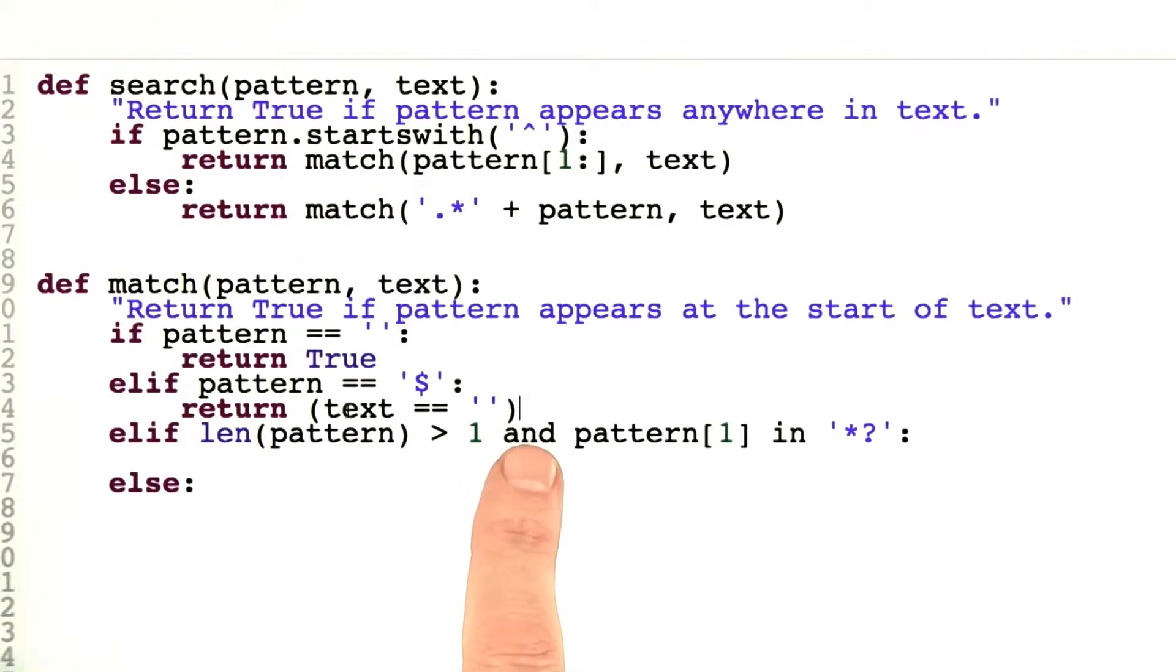So the first character is not a special character, except maybe it's a dot because we haven't dealt with dot yet. And so we want to match the first character and then we want to match the rest of the pattern, whether that's empty or whether there's something more.